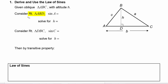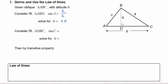Let's consider right triangle ABD. We can use SOH CAH TOA to find the sine of A — it would be the opposite leg, H, divided by the hypotenuse, c. If we solve this equation for H, we cross multiply and get that H is equal to c times the sine of A.